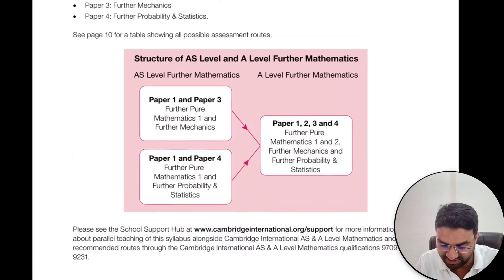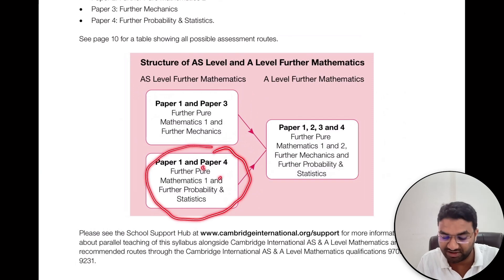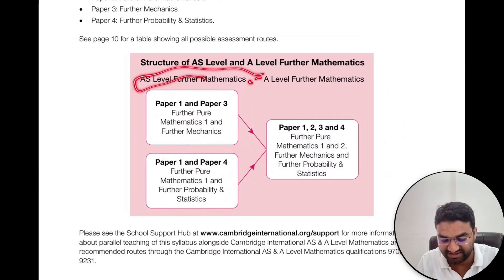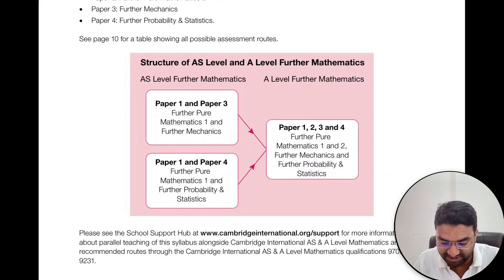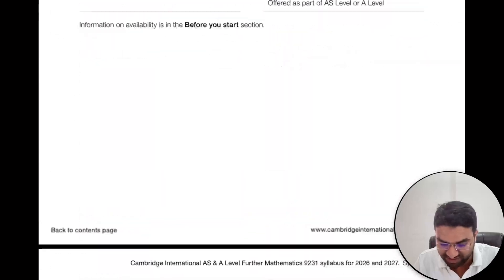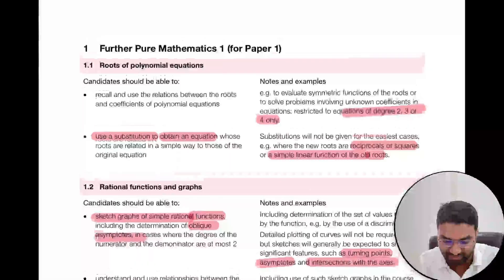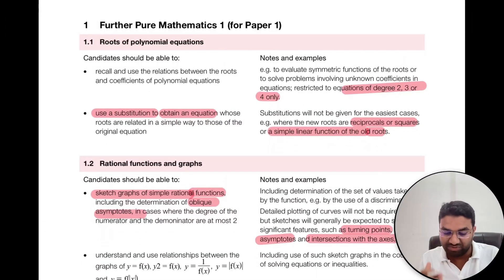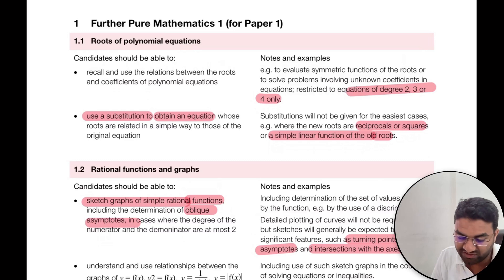Looking at the structure, for AS level you can choose paper one and paper three, or paper one and paper four. For A-level, you choose whatever the remaining two papers are. That's the simple structure. Now we'll jump straight onto the content overview. We'll discuss firstly paper one, Further Pure Mathematics 1, which has seven subtopics. The first one is roots of polynomial equations.